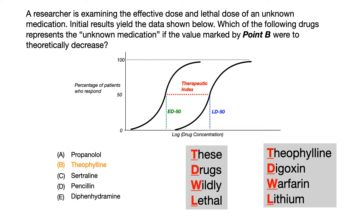Now, let's pretend for a second that you weren't sure or you didn't know that theophylline had a narrow therapeutic index, and you didn't know that when the LD50 were to theoretically decrease we'd be talking about one of these four drugs. Is there a way you could have worked backwards? The answer is yes. If you were to look at choices A, B, C, D, and E, one way to think about this is: what are the adverse effects of all of these drugs? Chances are that if there are a lot of adverse effects, that talks somewhat about the therapeutic index, because more toxicity is happening at lower doses.